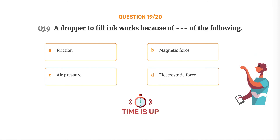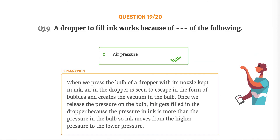The correct answer is Option C: Air pressure. When we press the bulb of a dropper with its nozzle kept in ink, air in the dropper escapes in the form of bubbles and creates a vacuum in the bulb. Once we release the pressure on the bulb, ink gets filled in the dropper because the pressure in the ink is more than the pressure in the bulb, so ink moves from higher pressure to lower pressure.